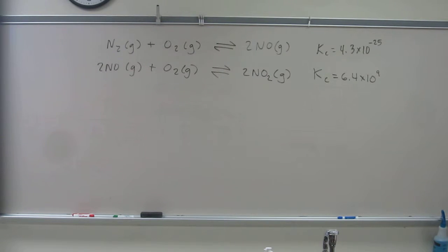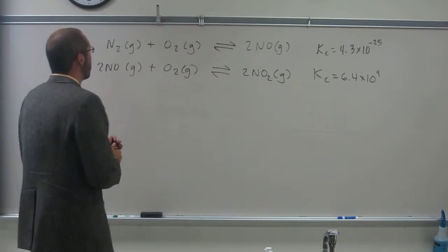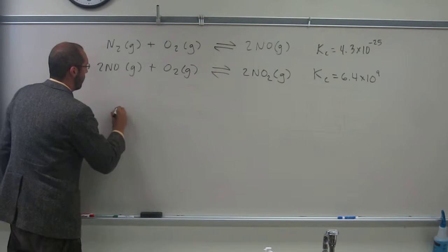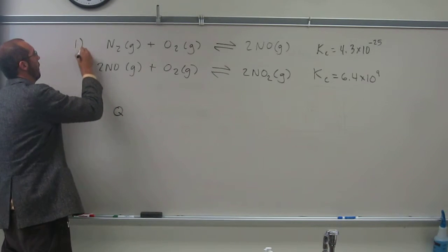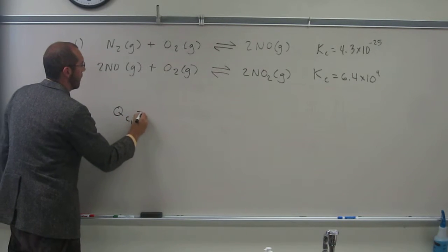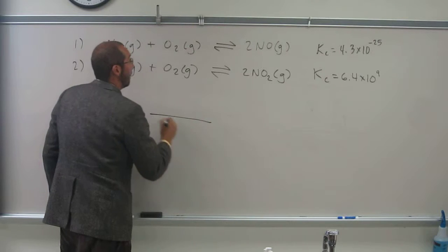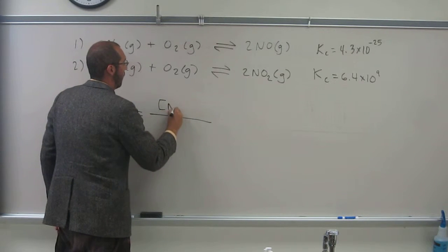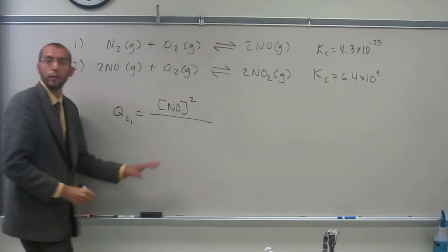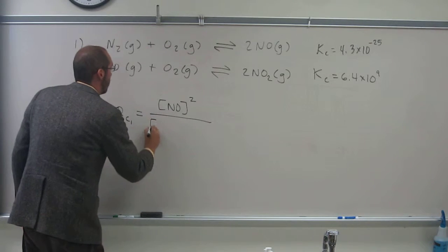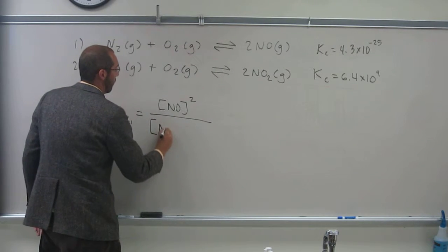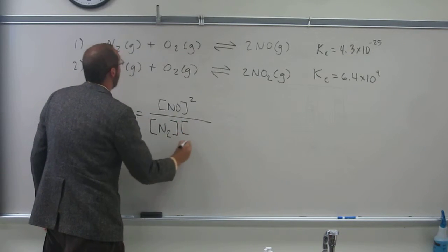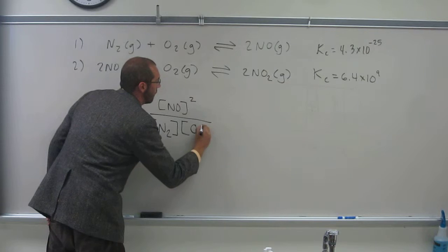The elementary steps or the two reaction steps that we see up here have QCs themselves. So let's figure out what those QCs are of these two reactions. We'll call this reaction one and this one reaction two. So QC1 is going to be the concentration of NO squared. Is everybody okay with that?